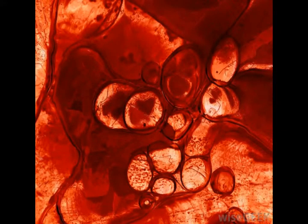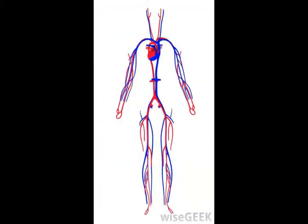Peripheral circulation produces what are known as peripheral pulses, which serve as a confirmation, particularly to health care providers, that the extremities of the body and the dermis are receiving oxygenated blood and all of the nutrients they need that are carried in the blood.